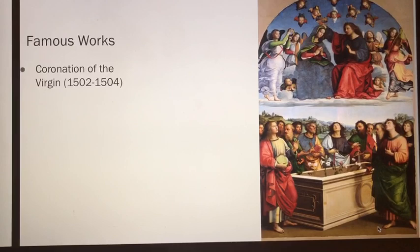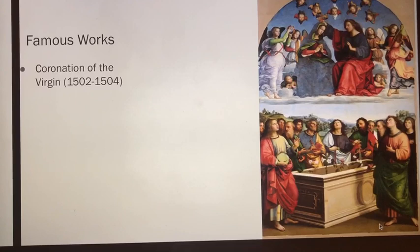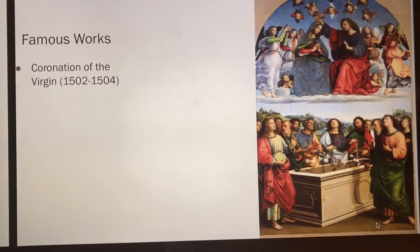In the upper part of the composition, among angel musicians, Christ crowns the Virgin, while in the lower part, the apostles — among whom Saint Thomas with the girdle, which he has received as a gift from the Virgin — are arranged around the tomb, in which there are flowers and lilies of the Virgin who has ascended to heaven.